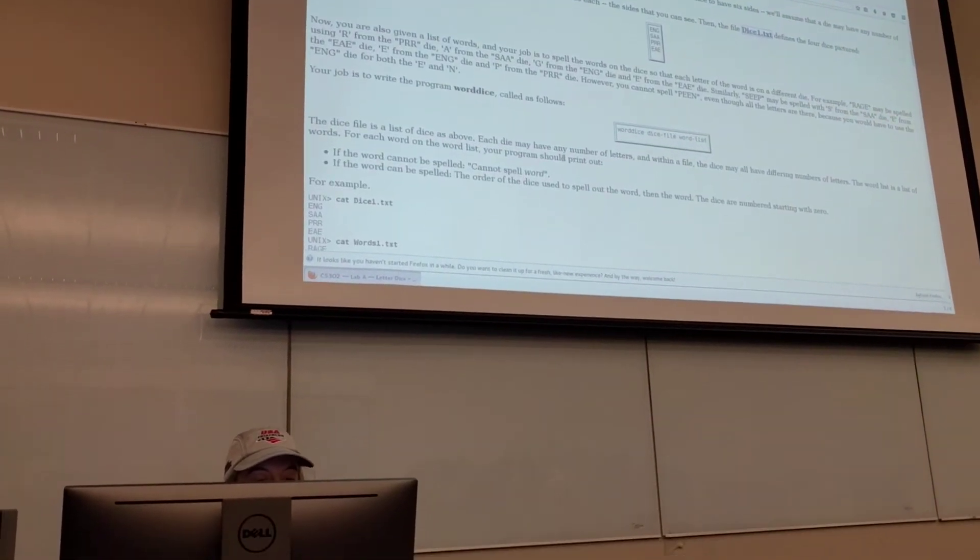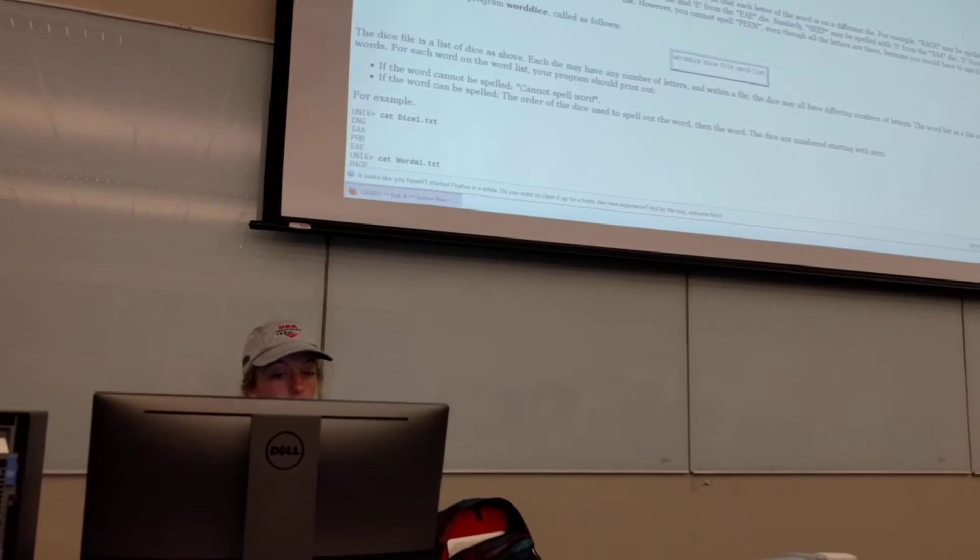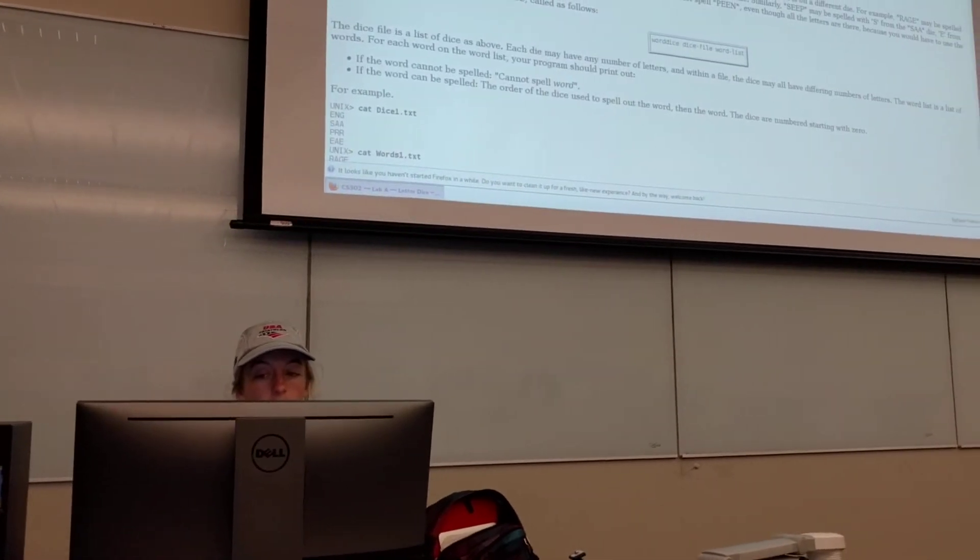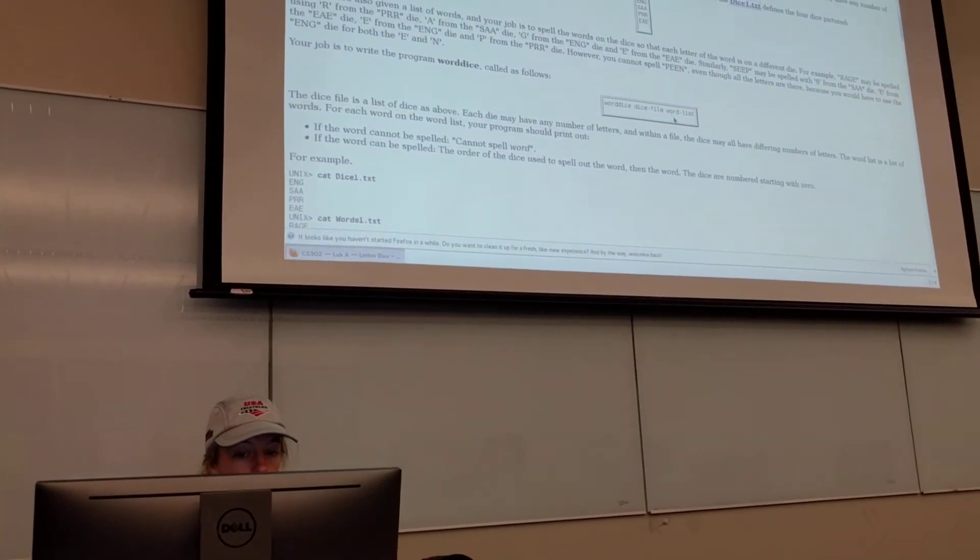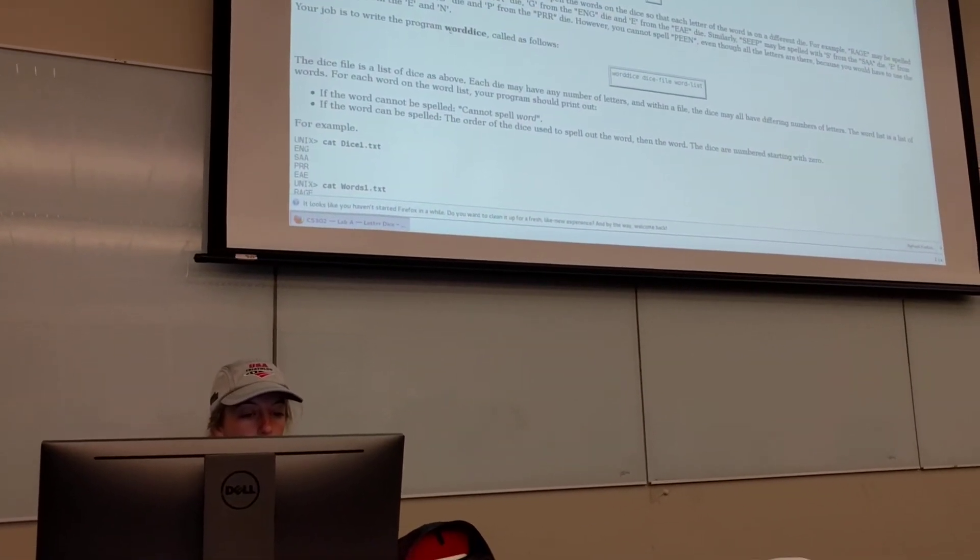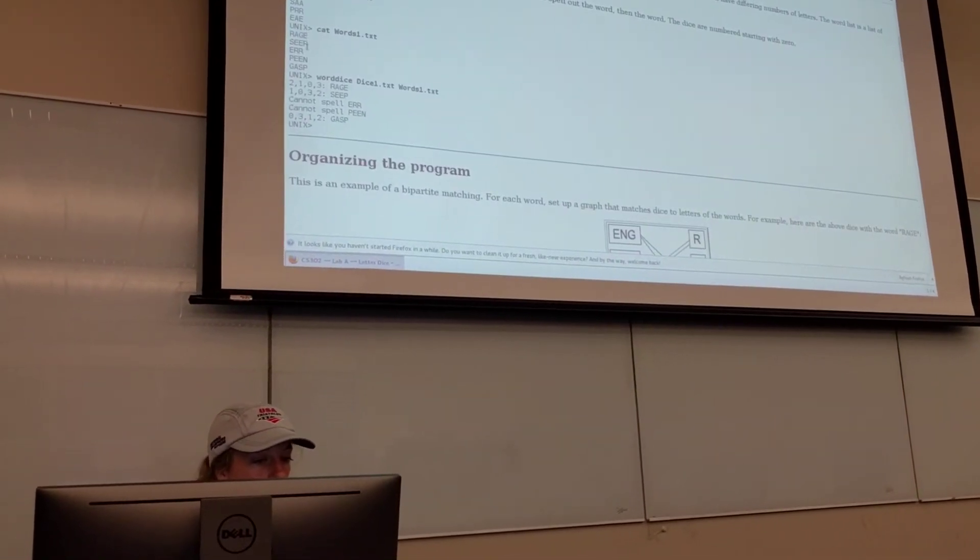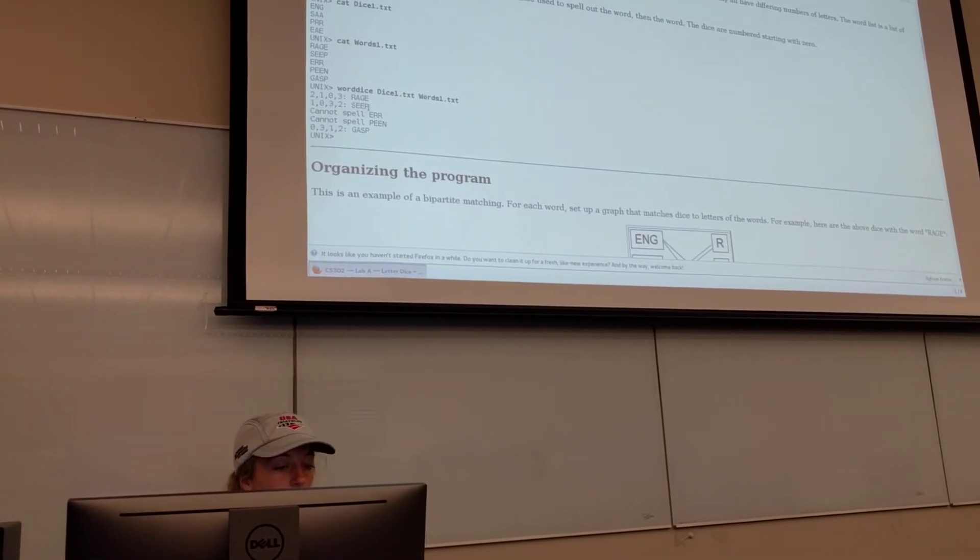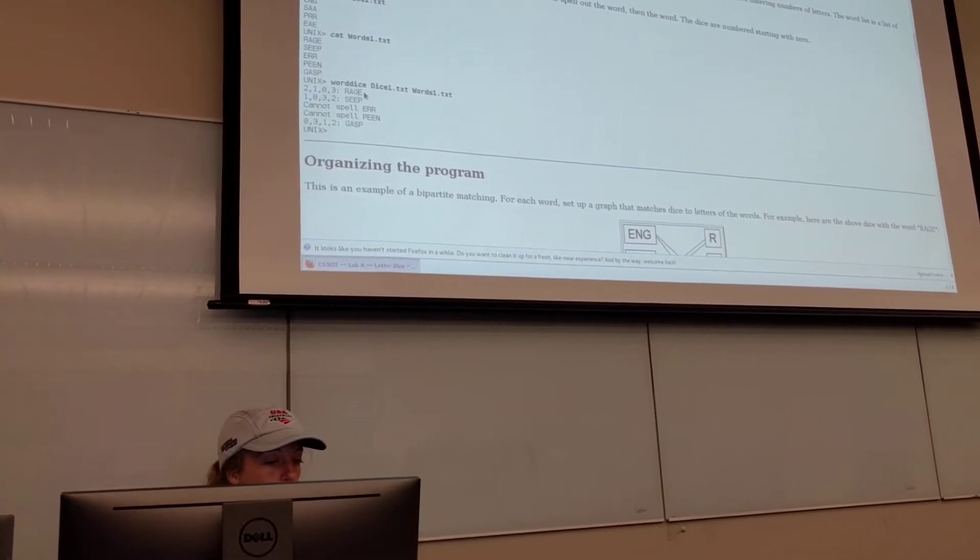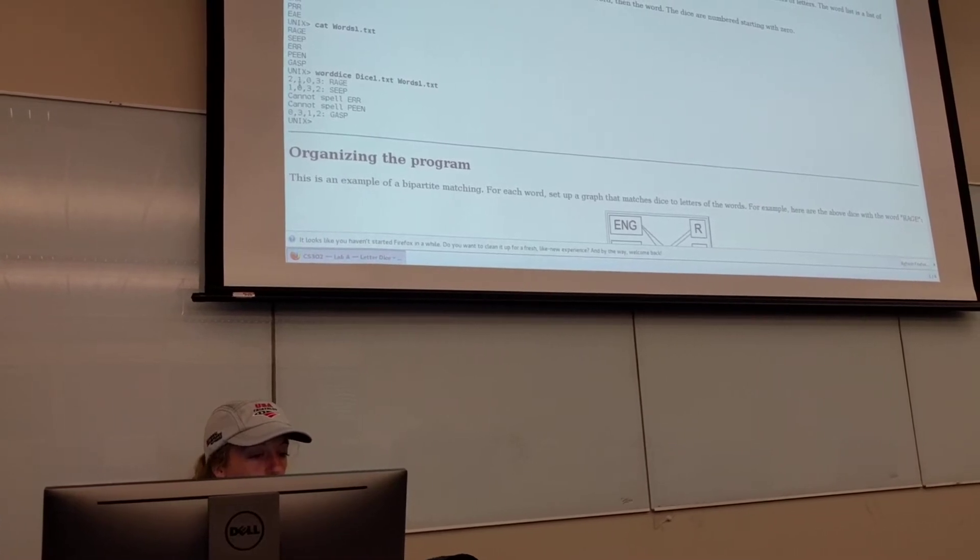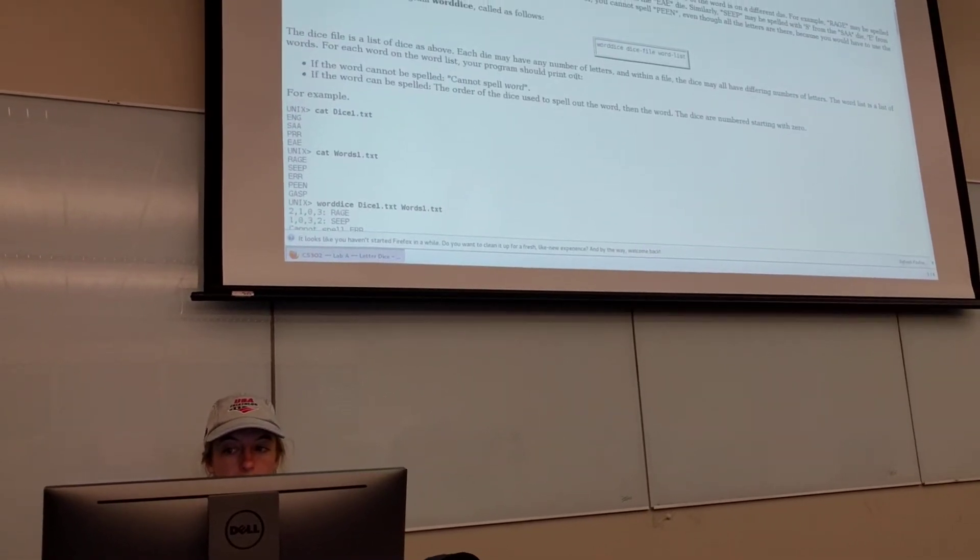You're also going to be given a list of words along with the dice. Your job is to see if you can spell the words using the dice so that each letter of the word is on a different die. You're going to run the program word dice, and this is what your output should look like. We're given the words rage, seep, er, peen, gasp. It'll tell you if you can spell these words and which dice you use to spell the words. Rage, R-A-G-E, was spelled with dice number two for the R, one for the A, zero for the G, and three for the E.